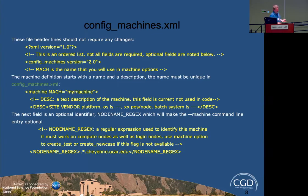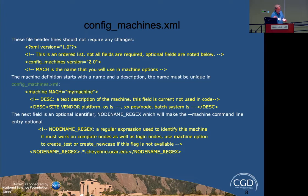There are cases where the node name regex won't work. For example, if you have one machine with two types of processors, you may need to define that as two different machines — one machine definition for processor A, one for processor B — so you can fine-tune which ones you want to use. One of them can have the node name regex, and the other you would just specify with the machine name.